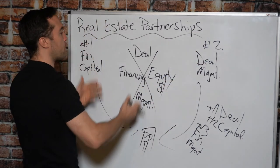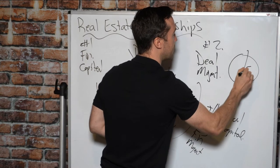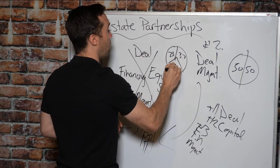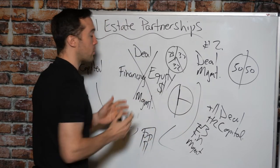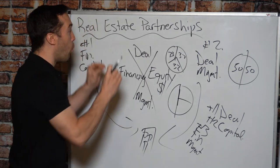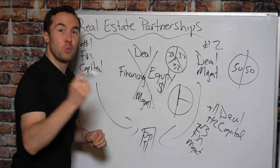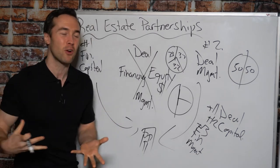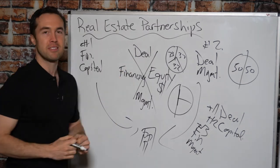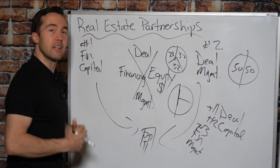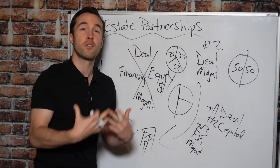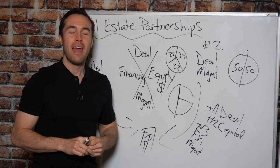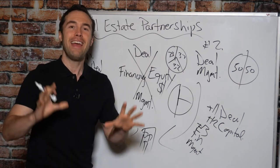How you structure the partnership will vary based on the situation and what the deal needs. In the first example with two people, a 50-50 split is very common. If you have three people, you could go 33% each, or one person takes half and the others divide into quarters. The key thing is: if you're missing one of these components, you need a partner. This is why it's so powerful to partner with people in real estate investing, because it's very rare — especially as deals get bigger — that you have all the equity or meet all the lender requirements on your own.